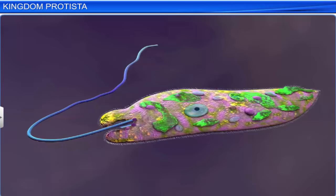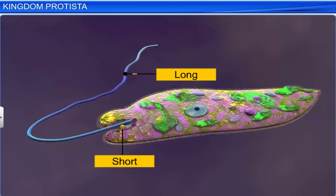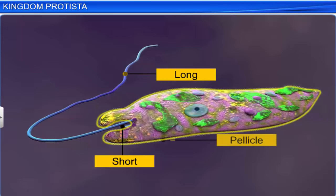Euglenoids, like dinoflagellates, have two flagella — one short and one long. Instead of a cell wall, euglenoids have a protein-rich layer called pellicle that makes their bodies flexible.